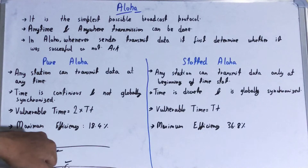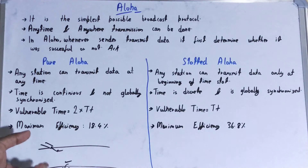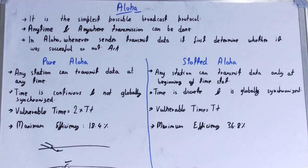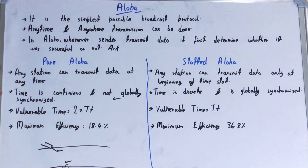The maximum efficiency of pure ALOHA is only 18.4% because the chances of collision increase since there is no particular time slot or frequency slot. If a particular time slot is free then data can be transferred, but there is no such mechanism here. Also, time is continuous and not globally synchronized — because there is no time slot, any station can transmit data whenever it wants, making the dependency of stations on time negligible.